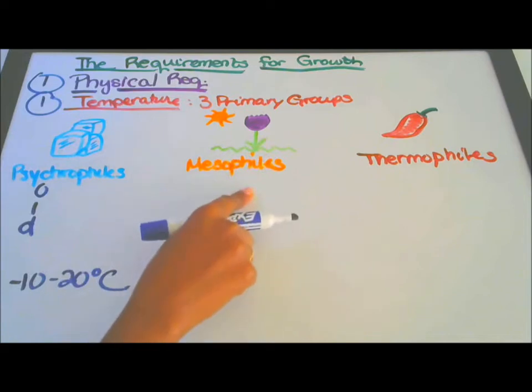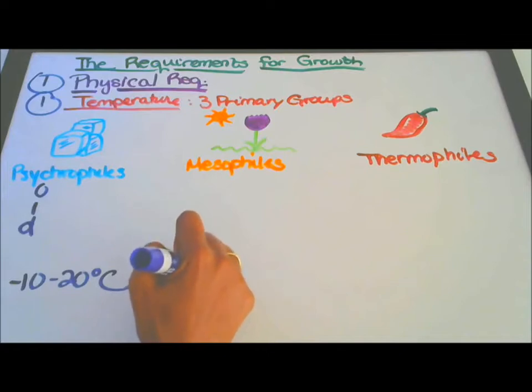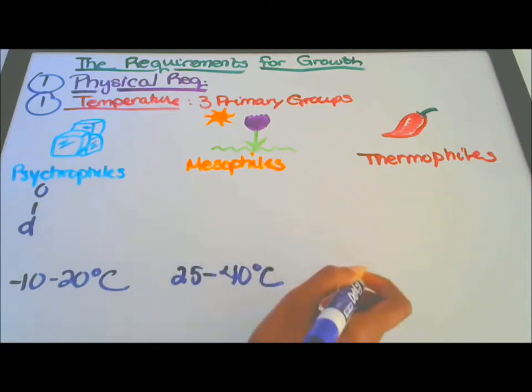Okay, next I have mesophiles. They grow in perfect temperature, warm temperature. So here, the temperature is 25 degrees to 40 degrees Celsius.